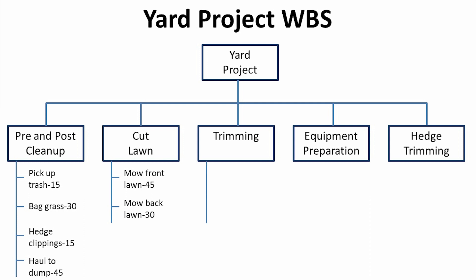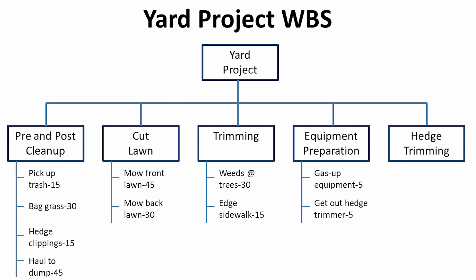Breaking down the trimming: I've got to trim the weeds around all the trees — that'll take about 30 minutes — and then I need to edge around the sidewalk, which I've allocated 15 minutes for. To get my equipment ready, I need to gas it up — five minutes — and then find and get out the hedge trimmer, another five minutes. Under hedge trimming, there's really nothing to break down other than trim the hedges, so I just have a time of 30 minutes.